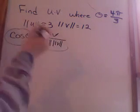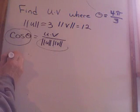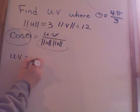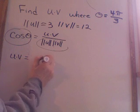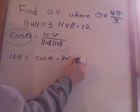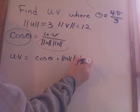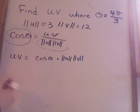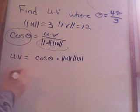So basically, I just have to rearrange this problem first. So u·v, which is the dot product, equals cosine theta times magnitude of u, magnitude of v. I just multiplied both sides by this magnitude, clearing of fractions.